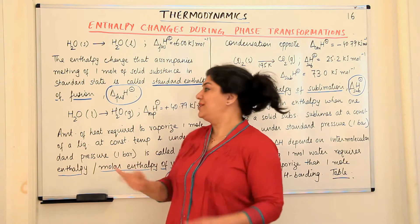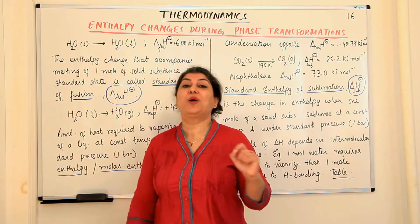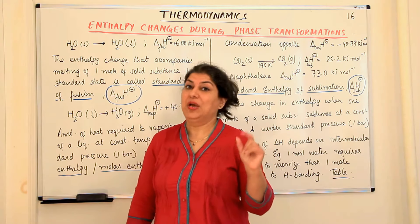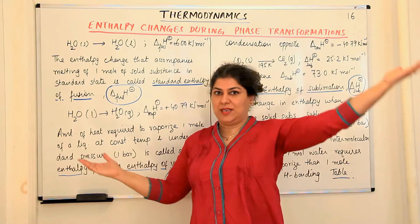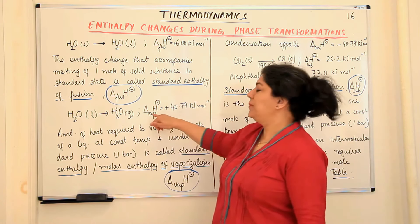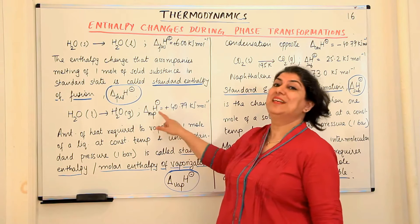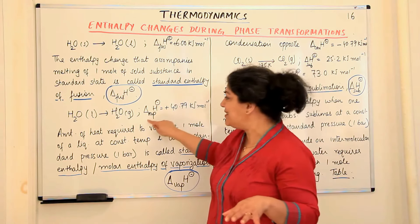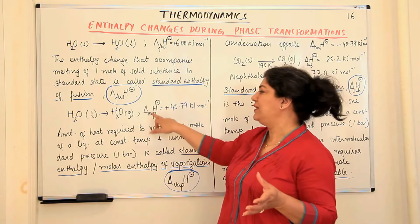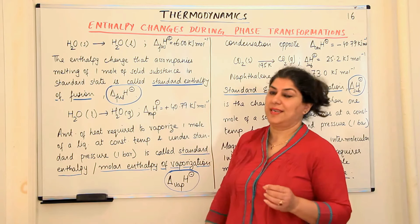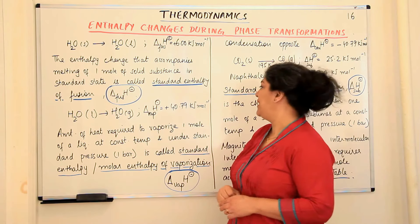Now we take the next process — vaporization. One mole of water in the liquid state turns into one mole of gas. The boiling point of water is 100 degrees Celsius, which is 373 Kelvin. At 373 Kelvin and one bar atmospheric pressure in an open vessel, with pure water and pure water vapors, this is the standard enthalpy of vaporization — written as ΔH°_vap. The amount of heat required to turn one mole of liquid water into one mole of gas at its boiling point is 40.79 kilojoules per mole.